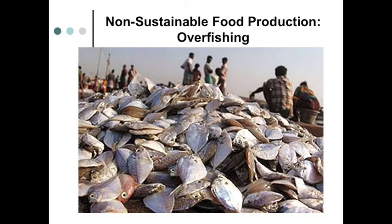Global fisheries is another example of a resource that can be used sustainably or non-sustainably. Currently we are using this resource up — we are overfishing to the extent that we are driving some species to extinction or near extinction. This is a non-sustainable use of this resource. There is a difference between sustainable use, which can go on for a long period of time — essentially forever — versus a non-sustainable use.